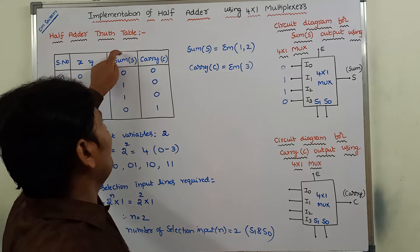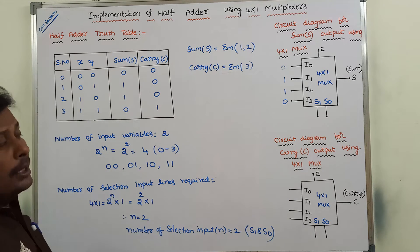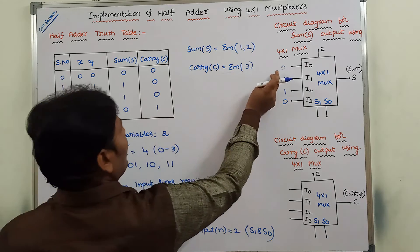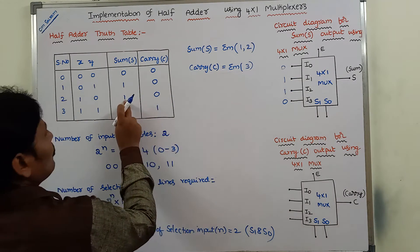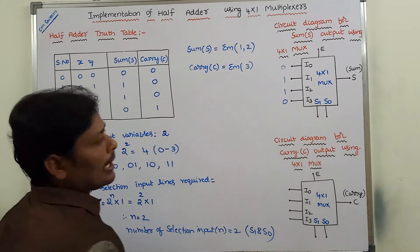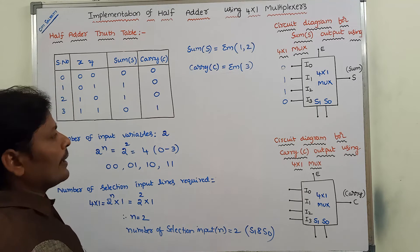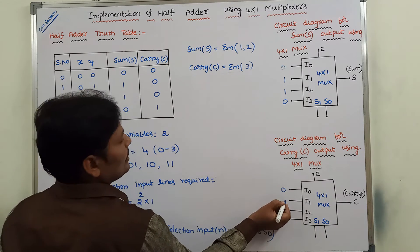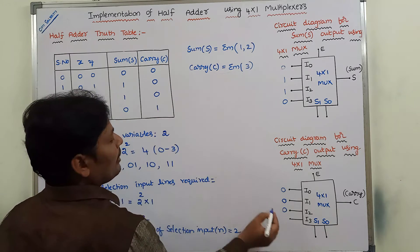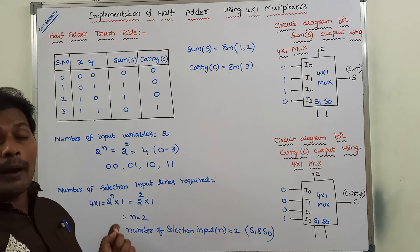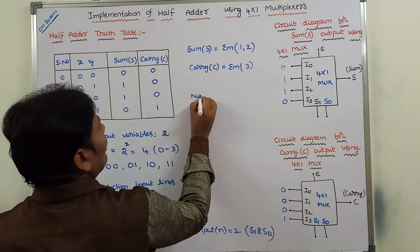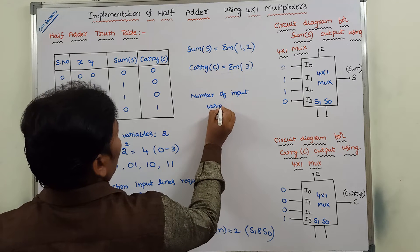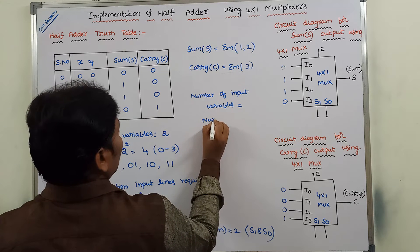For the carry output, directly read the carry column values and assign them: I0=0, I1=0, I2=0, I3=1. This direct-assignment procedure applies when the number of input variables equals the number of selection input lines. Here both are 2, so this condition is satisfied and we can directly map the truth table output column values to I0 through I3.